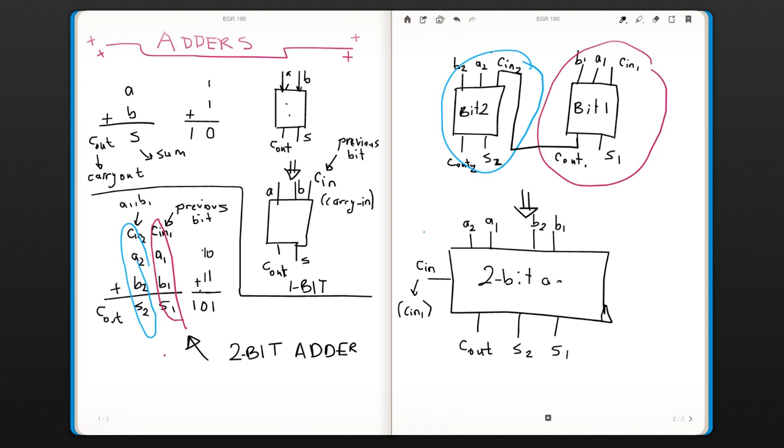We don't have carry in two because that's an internal node. And then we would have our outputs which is S1, S2, and carry out. Now this is our two bit adder and we went one step deeper to see how we could form a two bit adder using one bit adders.